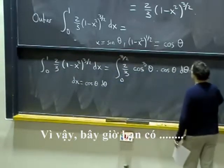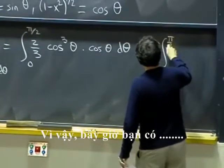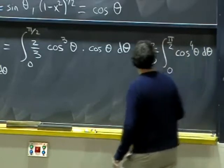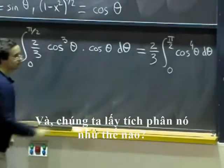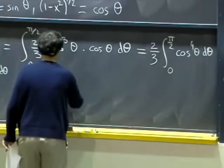So now you have the two-thirds times the integral from zero to pi over two of cosine to the fourth theta d theta. And how do you integrate that? Well, you have to use double angle formulas.